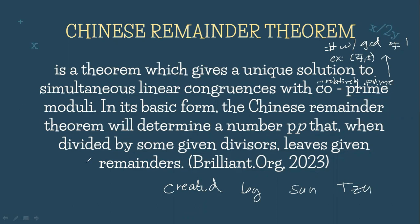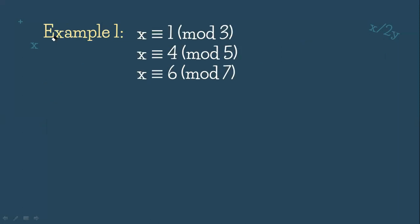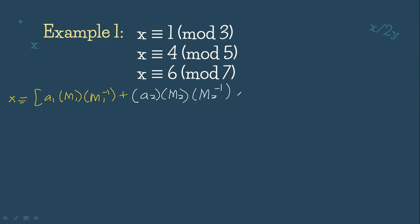The Chinese Remainder Theorem uses the remainders after dividing an unknown number by a succession of smaller numbers — such as 3, 5, and 7 — in order to calculate the smallest value of the unknown number. The Chinese Remainder Theorem is also used in cryptography. The formula is: x ≡ a₁·M₁·M₁⁻¹ + a₂·M₂·M₂⁻¹ + a₃·M₃·M₃⁻¹ (mod M).